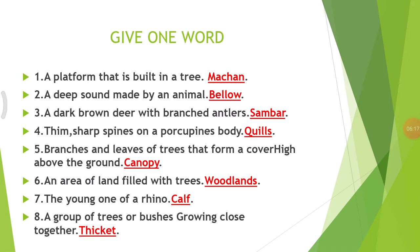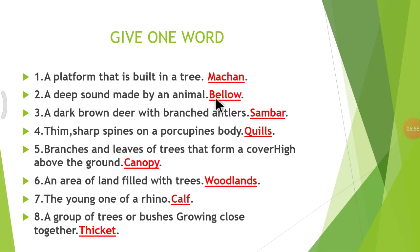The next topic is Give One Word. Number 1: A platform that is built in a tree — McCann. Number 2: A deep sound made by an animal — Bellow. Number 3: A dark brown deer with branched antlers — Sambar.